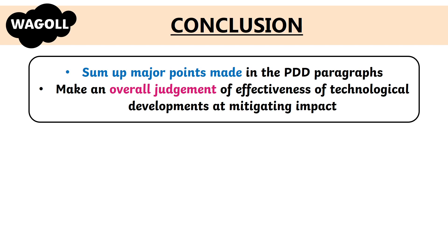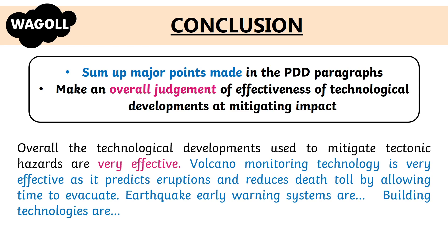In a good conclusion to this answer, you need to do the following: sum up any major points made in your PDD paragraphs and make an overall judgment of the effectiveness of the technology in mitigating impacts. For instance: overall, the technological developments used to mitigate tectonic hazards are very effective. Volcano monitoring technology is very effective as it predicts eruptions and reduces death toll by allowing time to evacuate. You would then summarise your other PDD paragraphs similarly. You should not copy out the entire PDD paragraph — sum it up very simply.